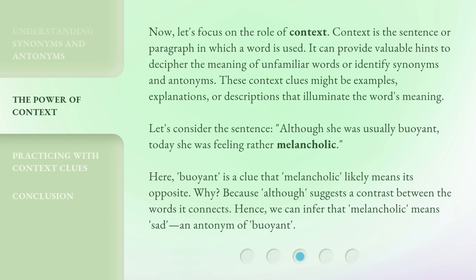These context clues might be examples, explanations, or descriptions that illuminate the word's meaning. Let's consider the sentence: although she was usually buoyant, today she was feeling rather melancholic. Here, buoyant is a clue that melancholic likely means its opposite.